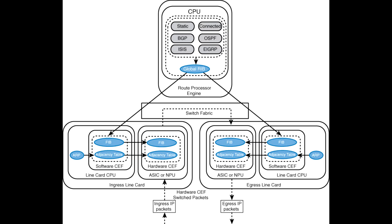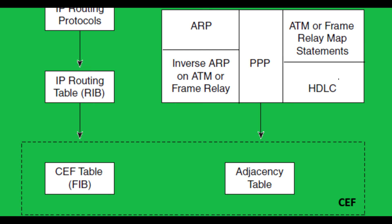In the data plane, the FIB plays a crucial role in packet forwarding. Derived from the RIB in the control plane, the FIB is a streamlined and optimized database focused on efficient data transmission. The FIB contains next-hop information for each route, ensuring the fastest and most direct path for data packets. The data plane utilizes the FIB to make forwarding decisions, determining the output interface and encapsulation details for each packet.